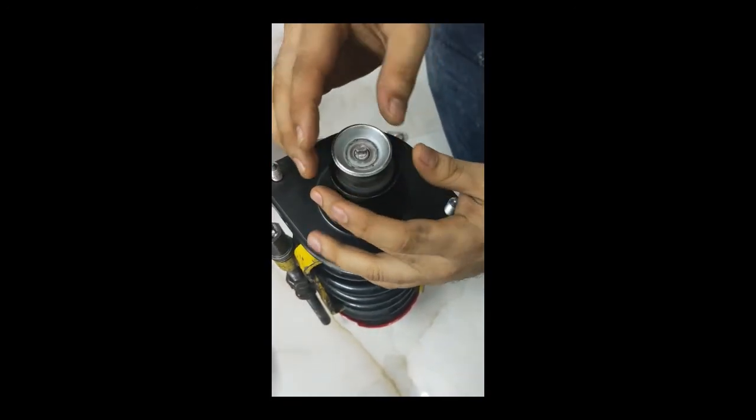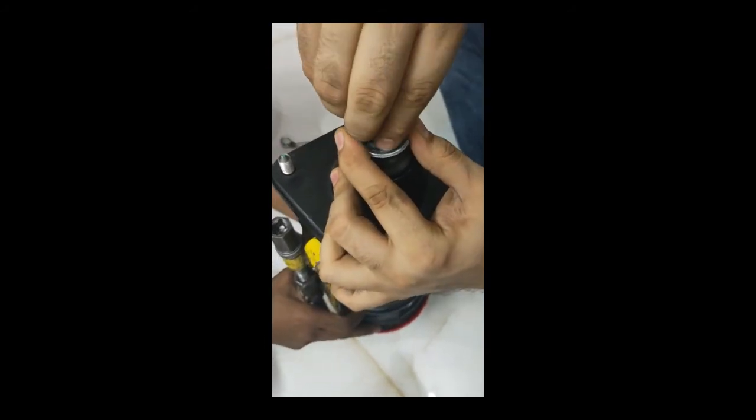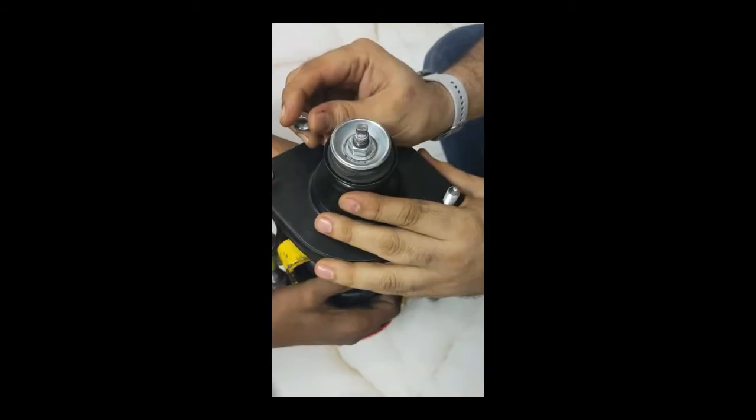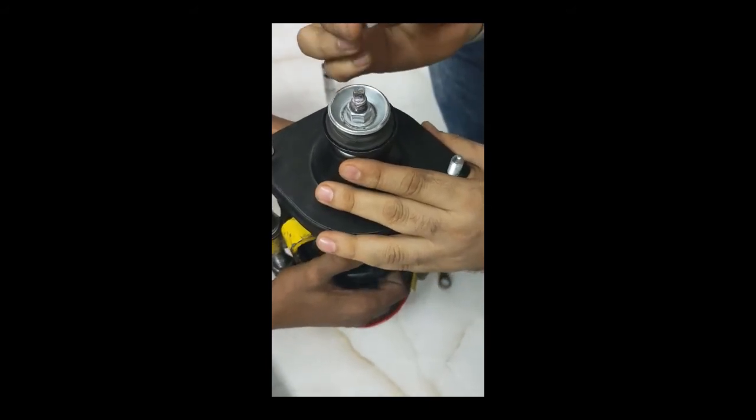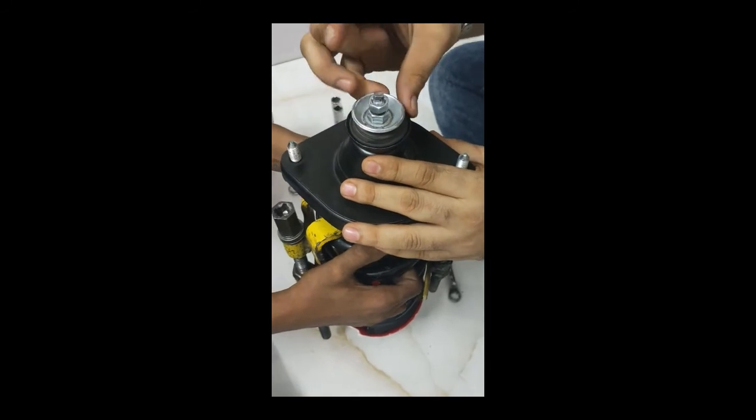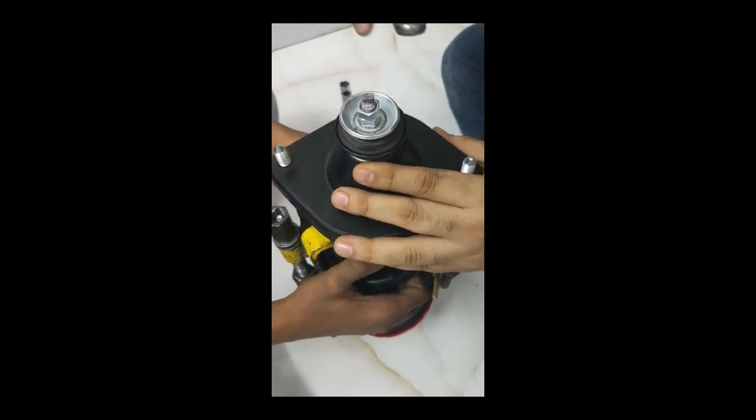Put on the old washer which you have removed from the old shock absorber. Put the retaining nuts onto it. After tightening this retaining nut, we have supplied another check nut which has to be bolted and tightened on top of the main retaining nut.